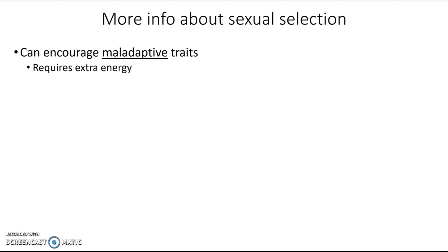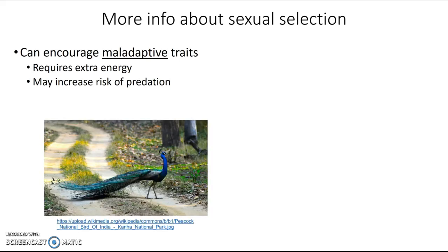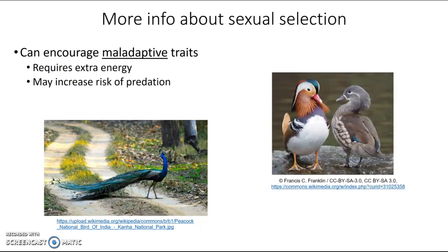Like artificial selection, sexual selection can encourage maladaptive traits. It requires extra energy to build a huge tail or sing an intricate song — energy that could be used to escape predators. Also, traits that females prefer may make males more susceptible to predation. Even when a peacock isn't using his tail to impress females, he still has to carry it around, slowing him down and making it harder to fly and escape predators. In mandarin ducks, the male's beautiful coloration makes him less camouflaged and more easily seen by predators.